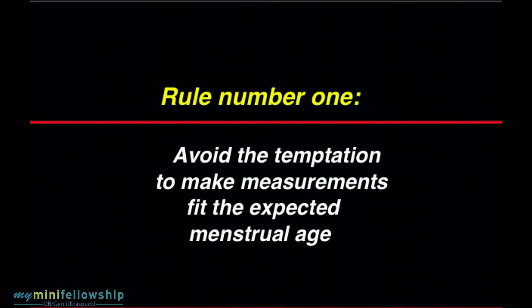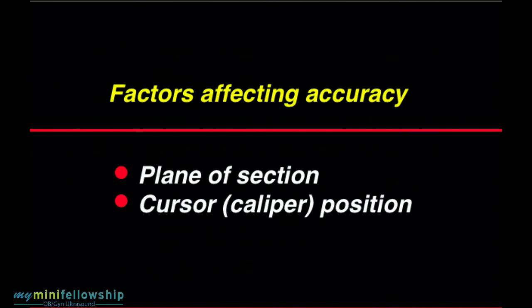Rule number one is we need to avoid the temptation to make measurements fit the expected menstrual age, and you are left with the responsibility to do two things. You choose the plane of section on which the measurement will be made, and you choose where to position the calipers at the end points of measurement, and that's it.